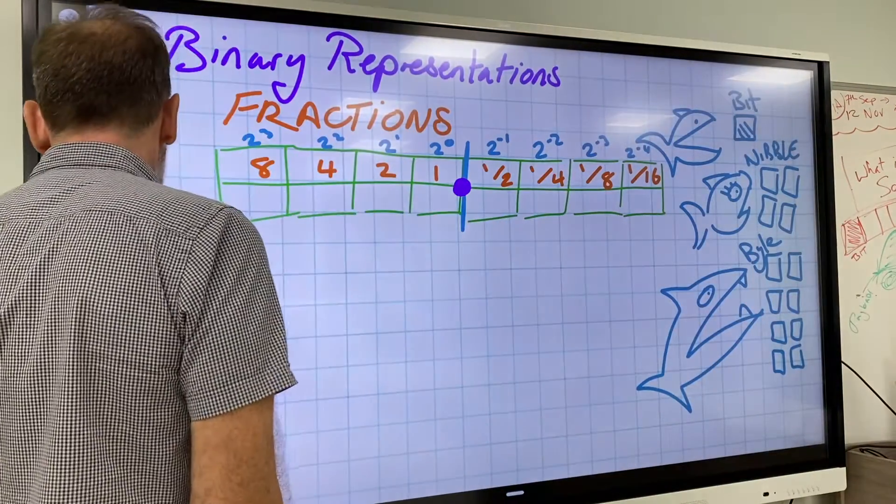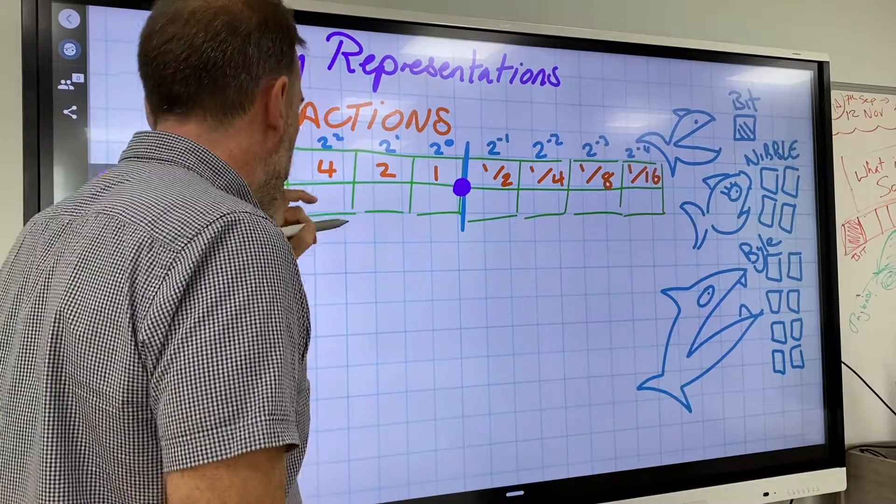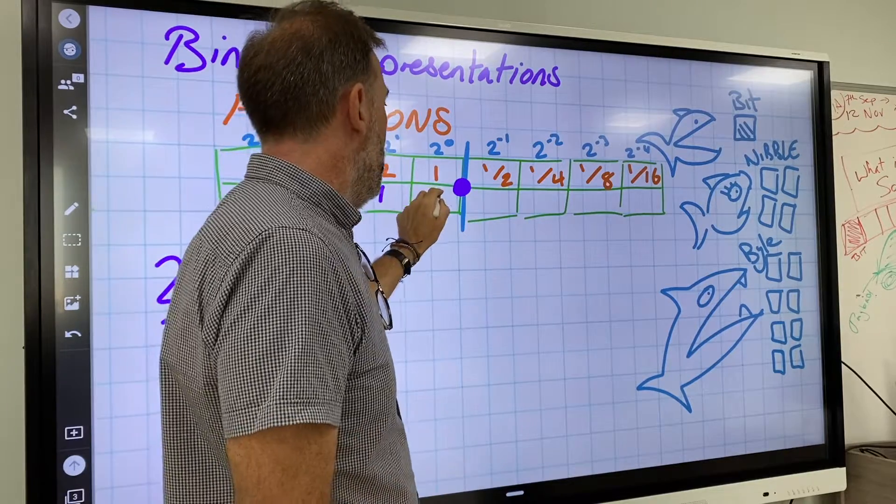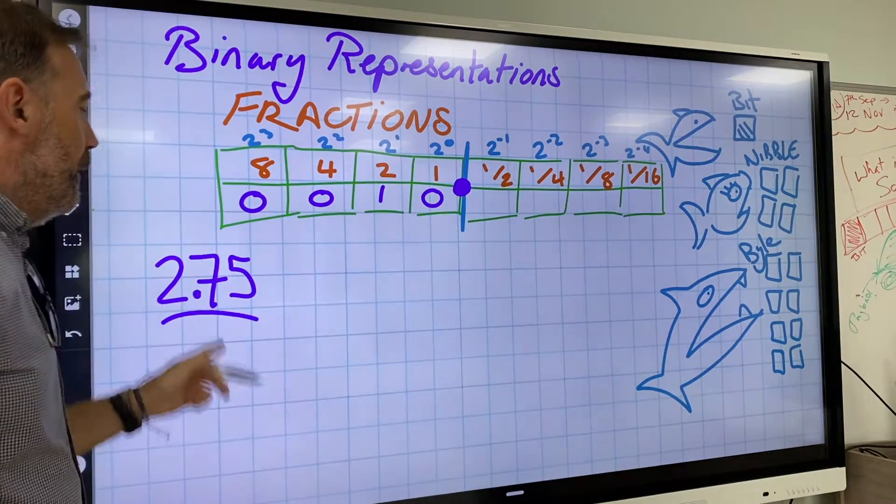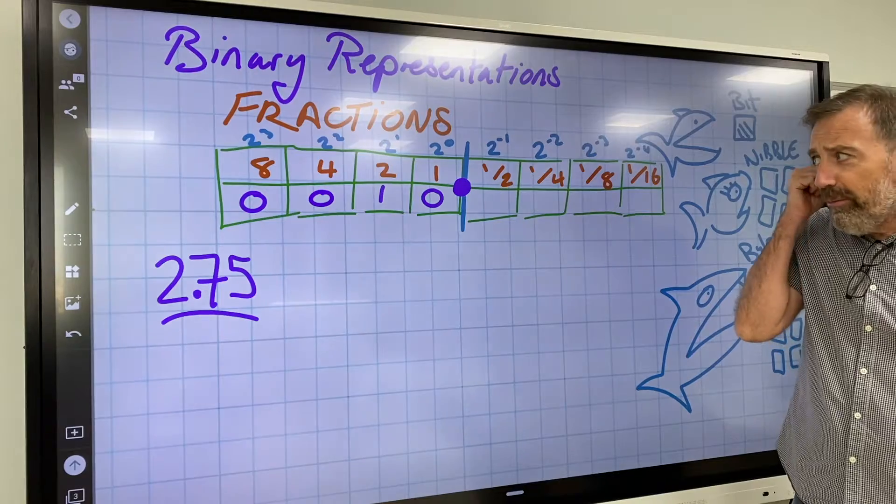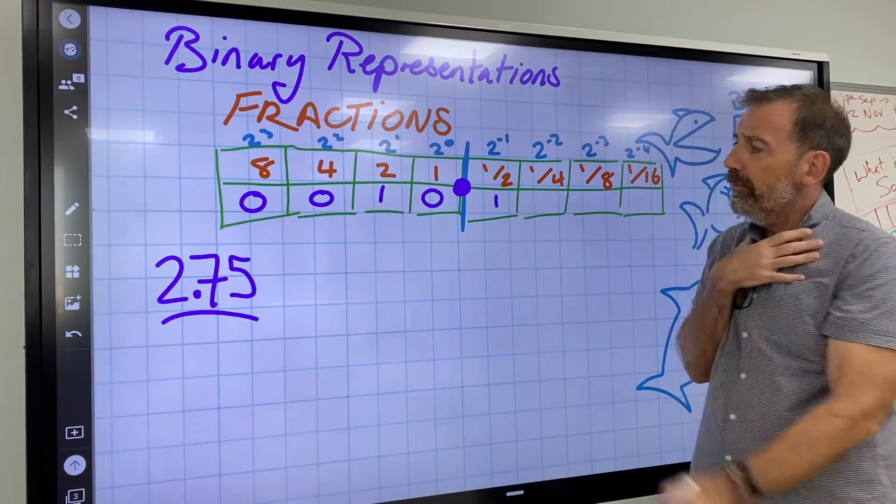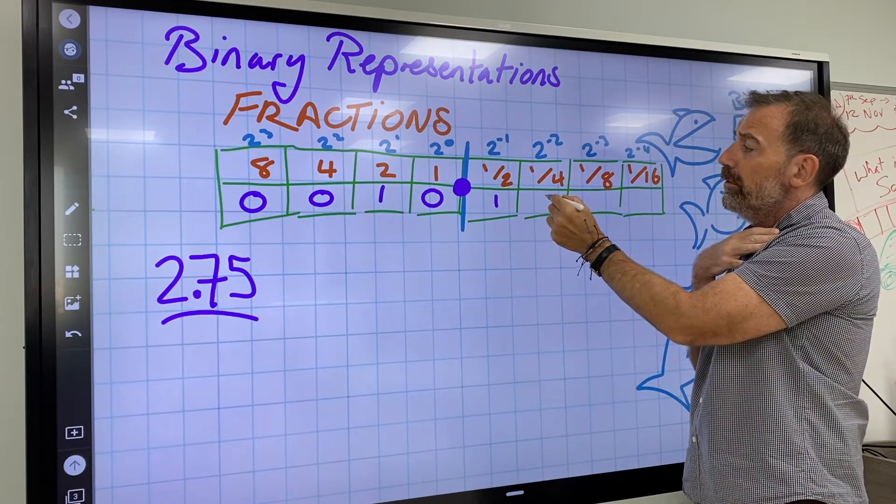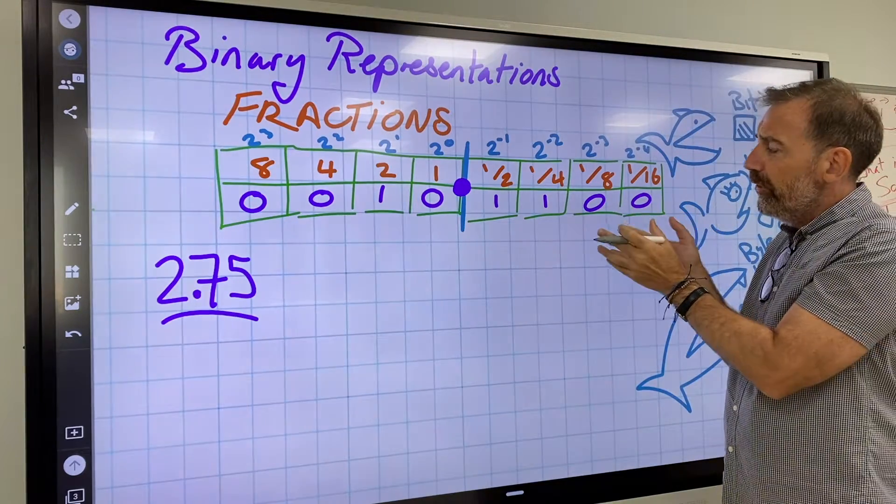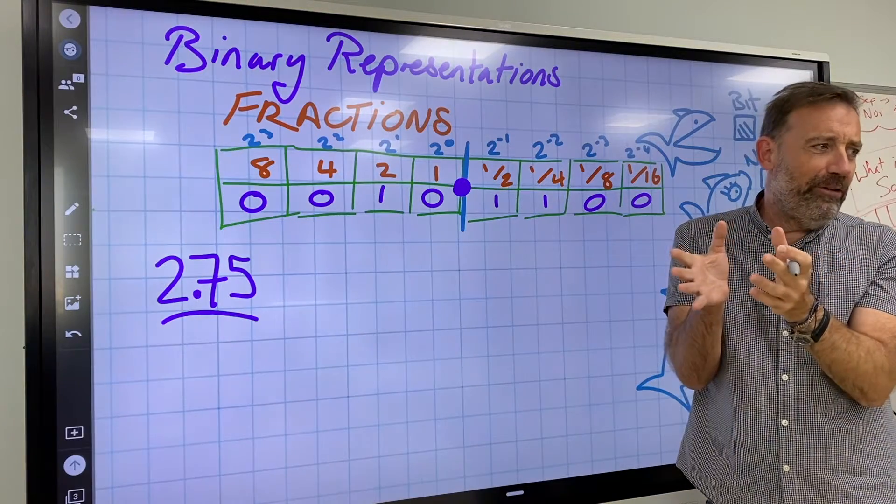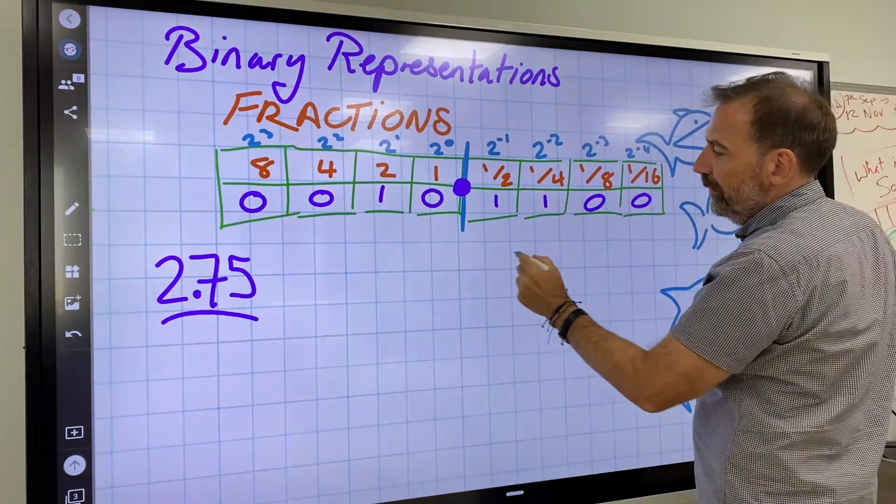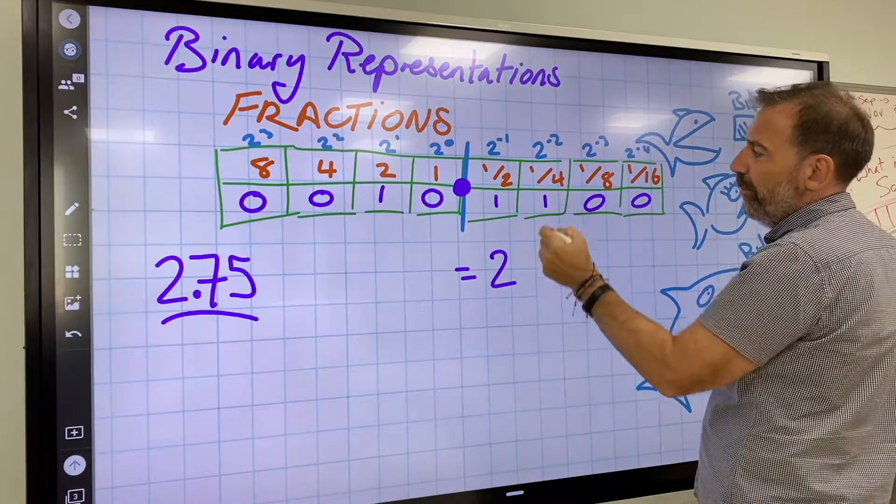So if I'm finding 2.75, this side is easy. I've got no 8s, I've got no 4s, I've got one 2, I've got nothing left. So I've got 0.5, so that does go in. Half plus a quarter is three quarters. The thing with this, we've got to convert fractions into decimals because we could write it as 2 and 3/4.